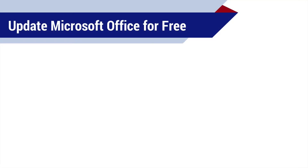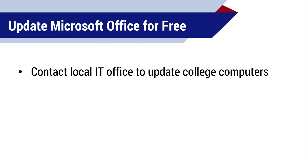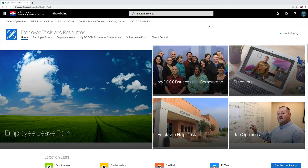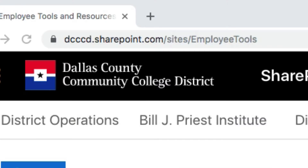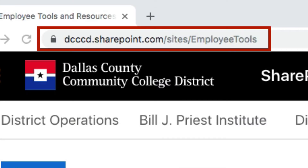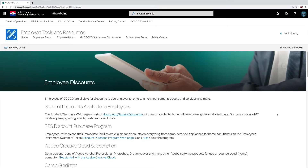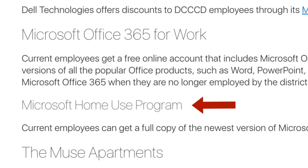If you'd like to skip some of those steps by using the newer version of Microsoft Office, you can easily get the update for free. To update Office on a college-owned computer, just call or email your local IT office and they'll update the software for you. You can also install the latest version of Microsoft Office on your personal computer for free by using the district license. Just go to dcccd.sharepoint.com/sites/employee-tools and select Discounts, then scroll down to find the Microsoft Home Use Program instructions.